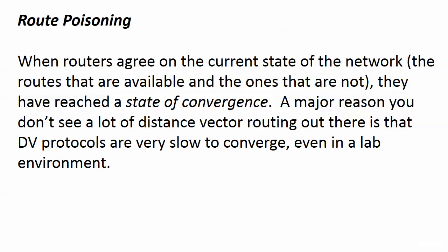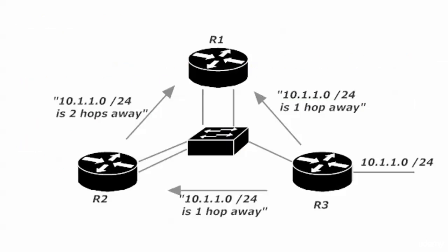Time for us to see what could be so positive about something that has such a nasty name — route poisoning. Here's an example of a distance vector protocol walkthrough. Router 3 is connected to 10.1.1.0/24, and it's advertising to routers 1 and 2 that that network is one hop away.